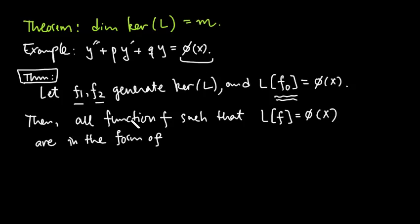So if you look at all the functions f under this operator that becomes phi x, f0 here is one example, in the following form: that f0 appeared in the answer plus all the kernel elements here, so c1 f1, c2 f2, where c1 and c2 are constants.